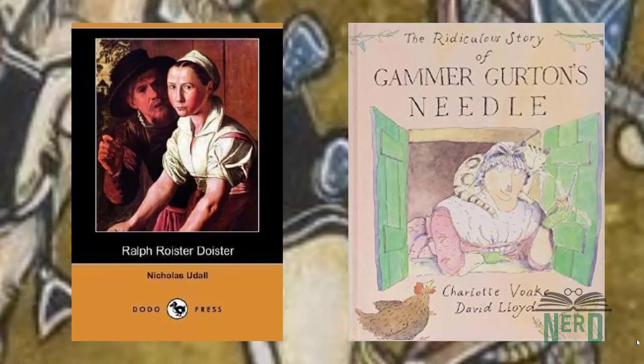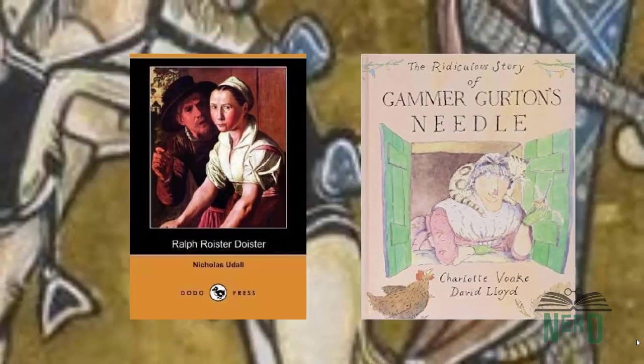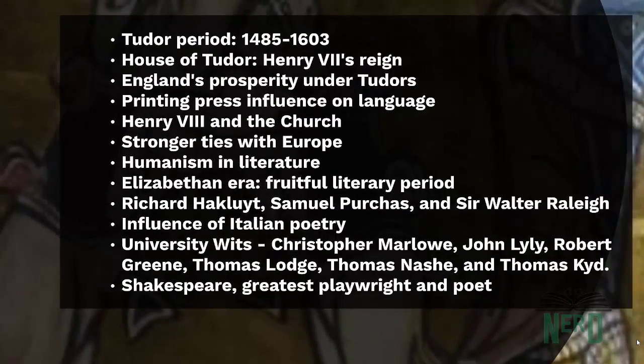Late 16th and early 17th century drama flourished in England with the work of the University Wits. The Wits included notable playwrights like Christopher Marlowe, John Lyly, Robert Greene, Thomas Lodge, Thomas Nashe, and Thomas Kyd. They set the course for Renaissance drama and paved the way for Shakespeare, regarded as the greatest dramatist and one of the greatest poets of all time.